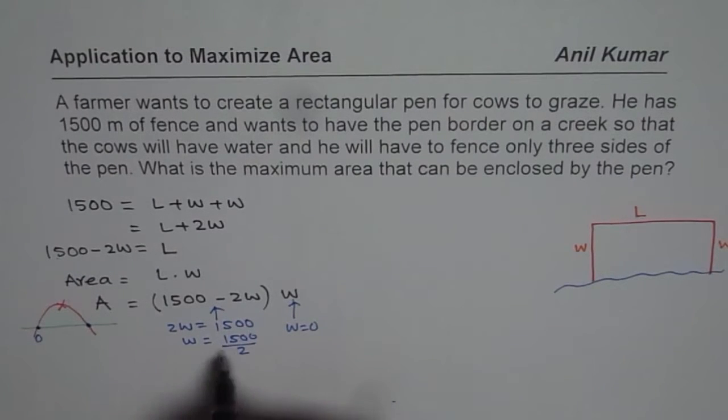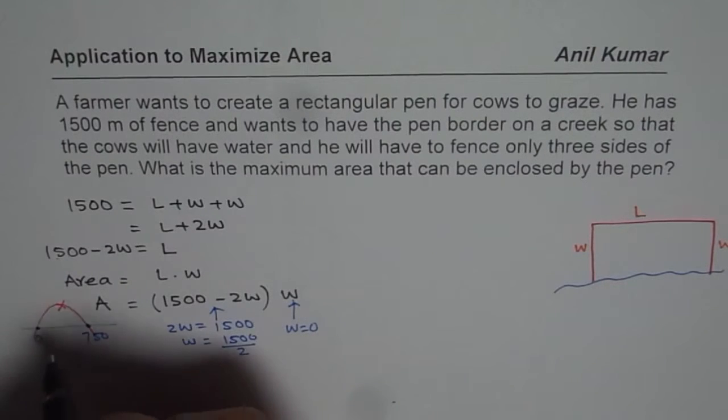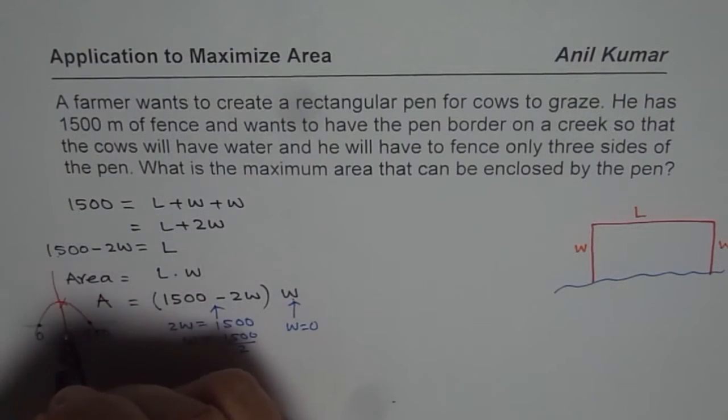So we have two zeros. So one is at 0, the other one is at 750. So these are the two zeros. How can you find the maximum, given these two zeros? Well, maximum will be always at the center, right? The axis of symmetry going through the center.